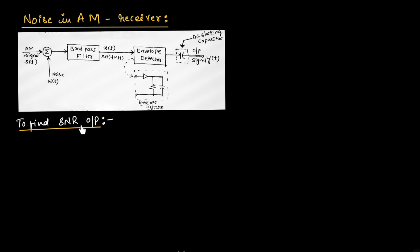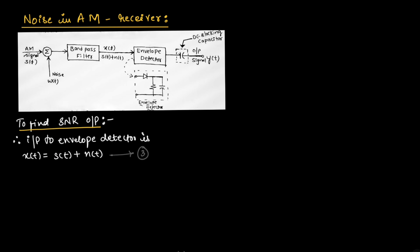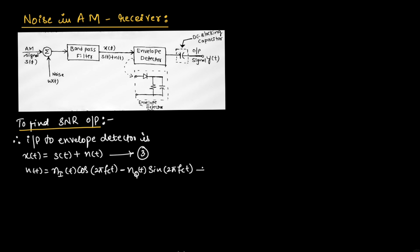Now let us find the signal to noise ratio of output. The input to the envelope detector is X(t) = S(t) + N(t), call this equation 3. Here N(t) is narrow band noise expressed in terms of in-phase and quadrature components: N(t) = N_I(t) cos(2πf_C t) − N_Q(t) sin(2πf_C t). Let us call this equation 4.